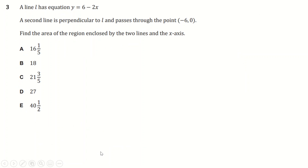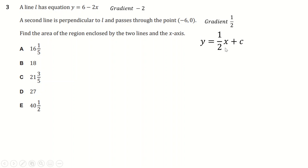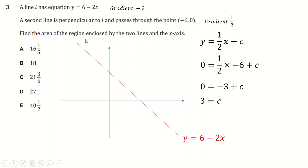Question three — we've done a similar one before. The gradient of line L is minus 2, so the perpendicular gradient is positive one half (negative reciprocal). That gives the equation of the perpendicular line. We know it passes through (−6, 0), so when y = 0, x = −6. Substituting gives c = 3. Drawing this: the original line is 6 − 2x and there's a 90-degree angle where they meet, with the perpendicular passing through y = 3.